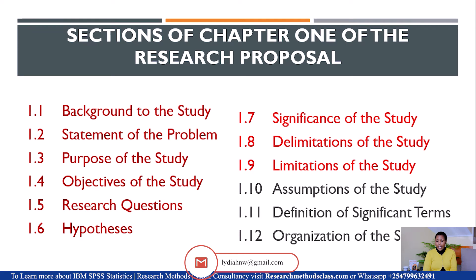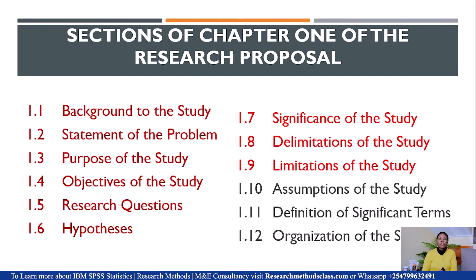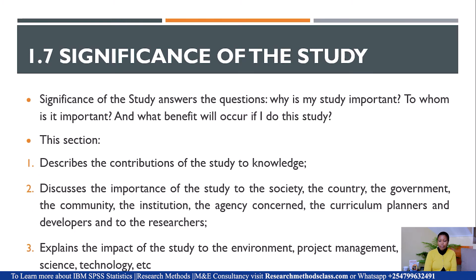These are the sections of Chapter 1 of the Research Proposal. So far, we have discussed Section 1.1 to 1.6. Today, we discuss Section 1.7 to 1.9. A section that starts with one point means that it is a section in Chapter 1, which is why all these 12 sections are one point. So we look at Section 1.7, which is significance of the study.